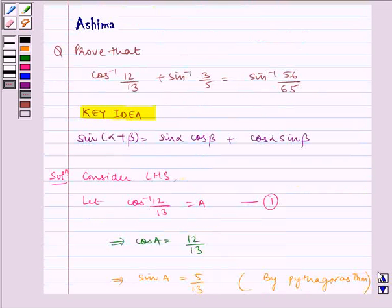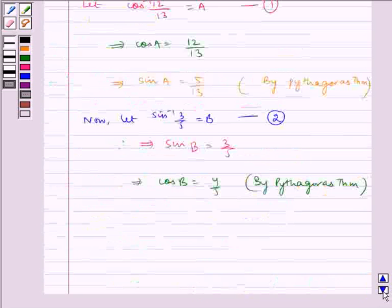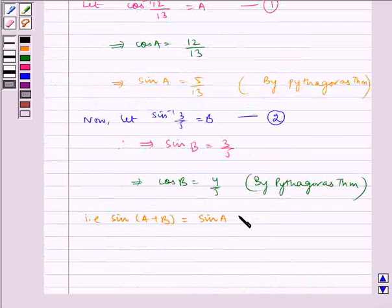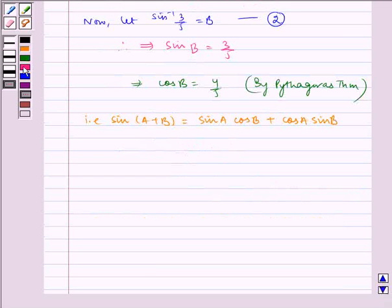Now, using this identity that we wrote in key idea, that is sin of A plus B is equal to sin A cos B plus cos A sin B. Substituting the values we get which is equal to 5 by 13 into 4 by 5 plus 12 by 13 into 3 by 5.